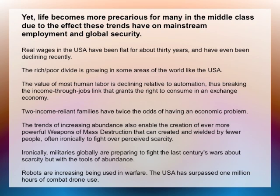Yet life is becoming more precarious for many in the middle class due to the effects of these same trends on employment and global security. Real wages in the USA have been flat for about 30 years. The rich-poor divide is growing in some areas. The value of most human labor is declining relative to automation — a problem in an exchange economy where if you don't have a job, you don't have a right to consume. Families dependent on two incomes have twice the odds of a big problem if someone gets sick or loses their job. In terms of national security, the same trends that allow increasing abundance also allow the creation of weapons of mass destruction more easily.